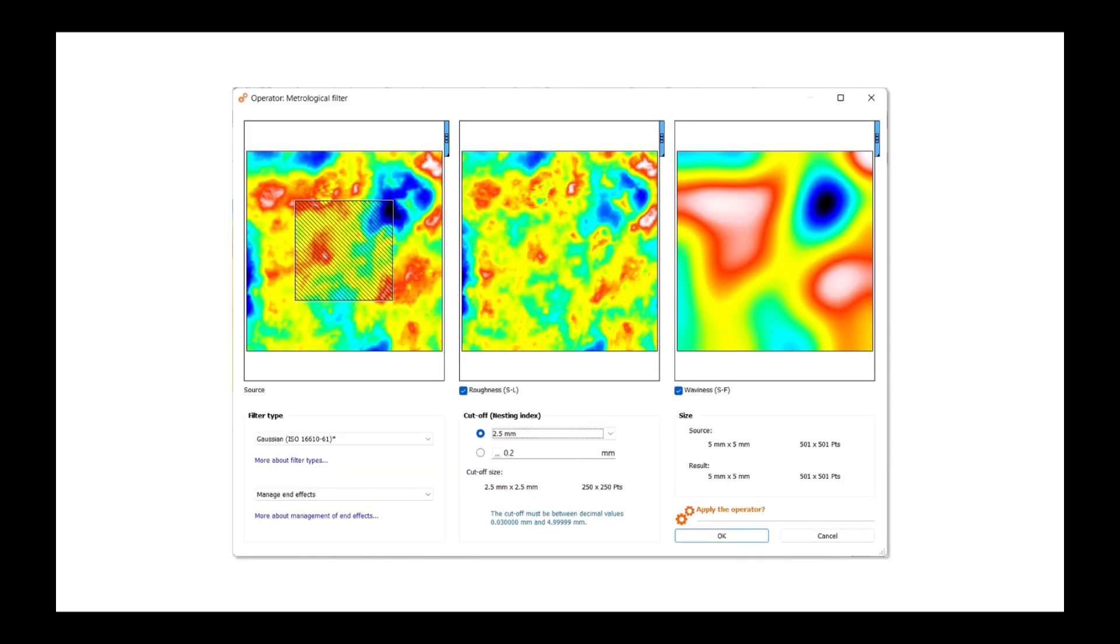We can check the proper separation of the two components in the metrological filtering operator of the Mountain software, by observing the roughness, here in the center, and the waviness, on the right, and by varying the cutoff. The roughness should contain only small height variations, on an approximately flat background. The waviness should describe only the large variations of the topography, without any detail.